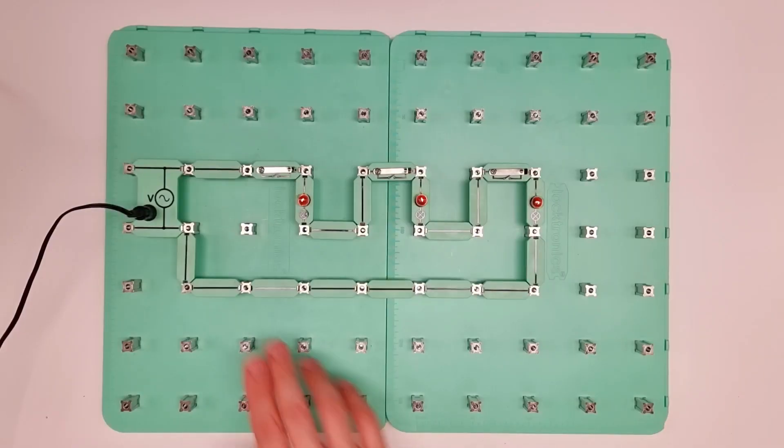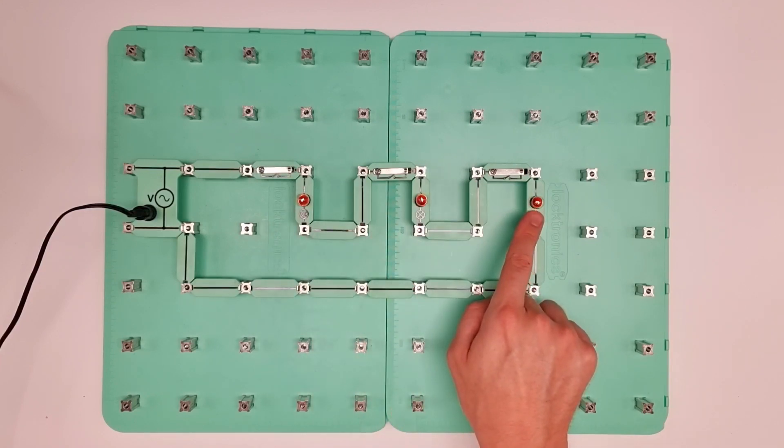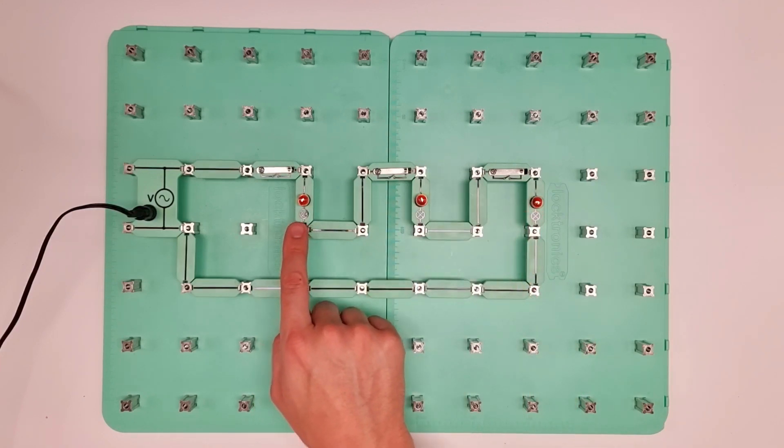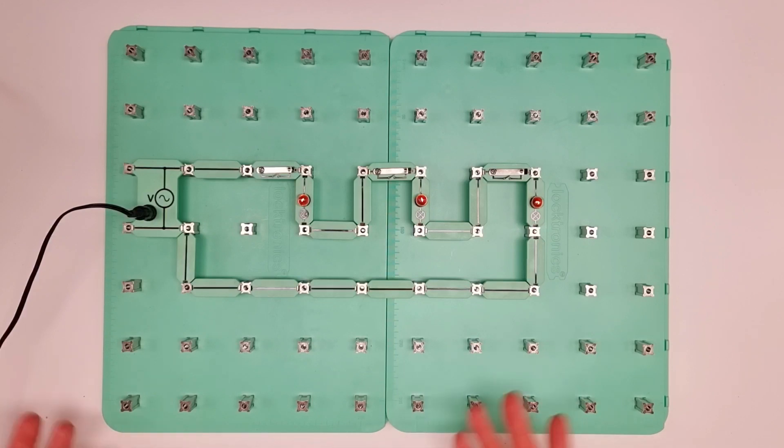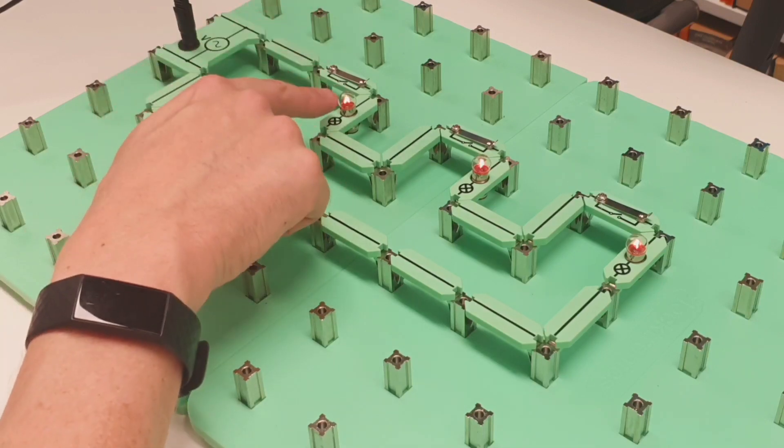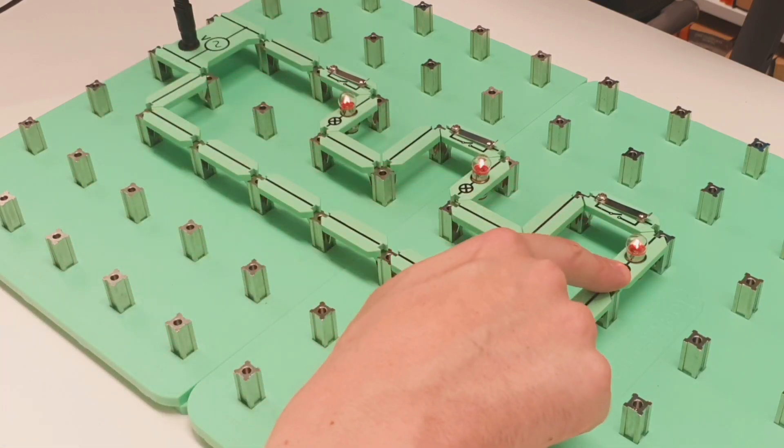Okay, so to answer this question, we've set up some lighting on our electronics board here. I've got these three lamps connected into the circuit, and these could represent the light fittings in three different rooms in a house or a commercial property, or even an industrial building. We've got here, let's say the kitchen, the dining room and the lounge, something like that.